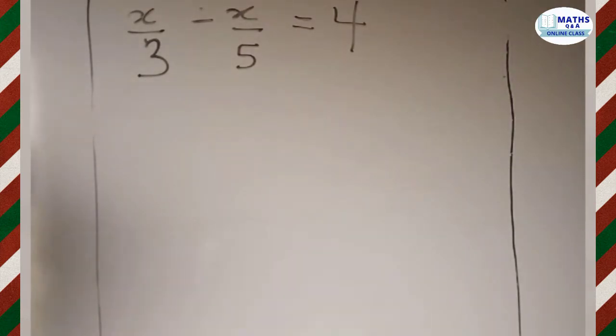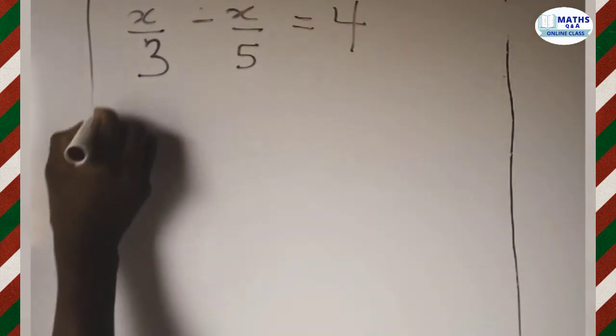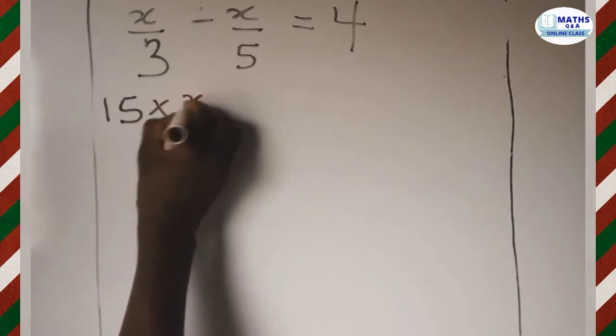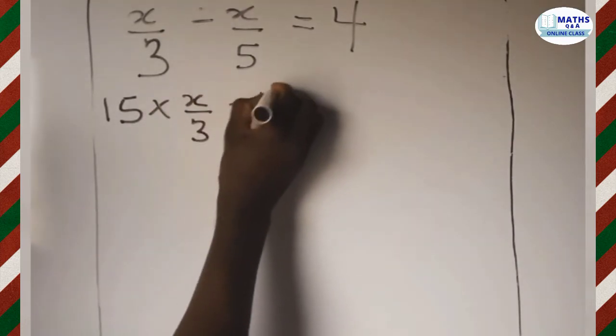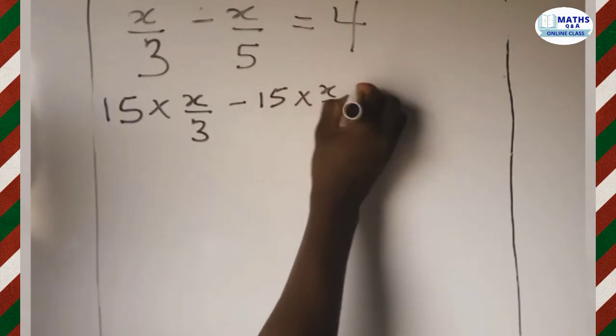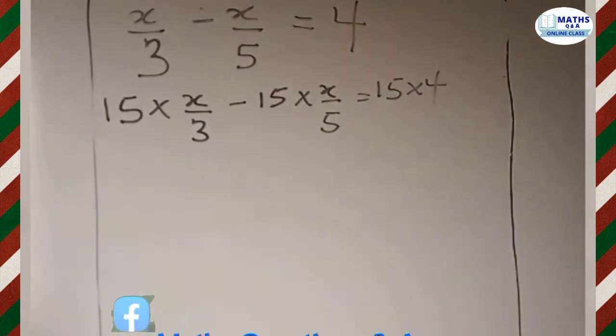So let's do that. The LCM for 3 and 5 is 15, so what I'm going to do is multiply 15 by each term in the equation.